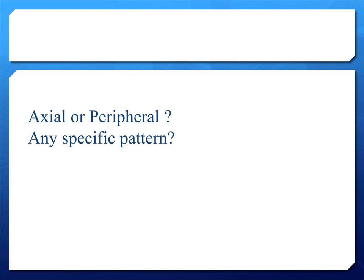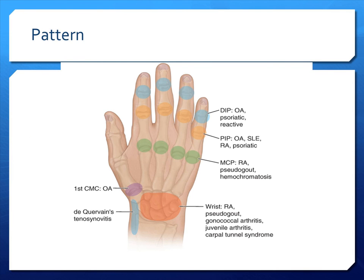Next, we have to find out if the patient has got axial or peripheral involvement, or if there is any specific pattern of joint pain. Here's a picture of a hand showing distribution of joint involvement in each condition. Patients with OA, psoriatic arthritis, or reactive arthritis are likely to have DIPJ involvement. As for patients with osteoarthritis, SLE, rheumatoid arthritis, or psoriatic arthritis, they would have proximal interphalangeal joint involvement. And for patients with metacarpophalangeal involvement, do think of rheumatoid arthritis, pseudo-gout, as well as hemochromatosis.